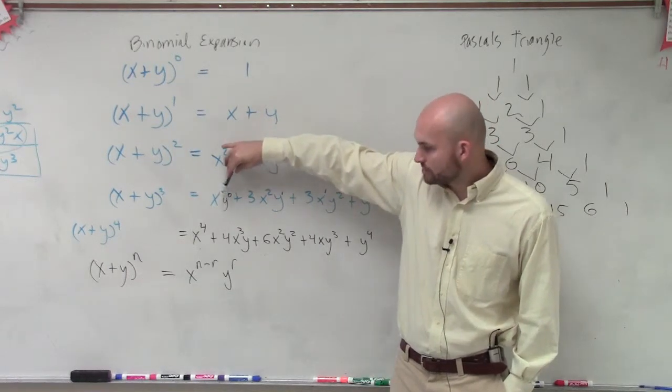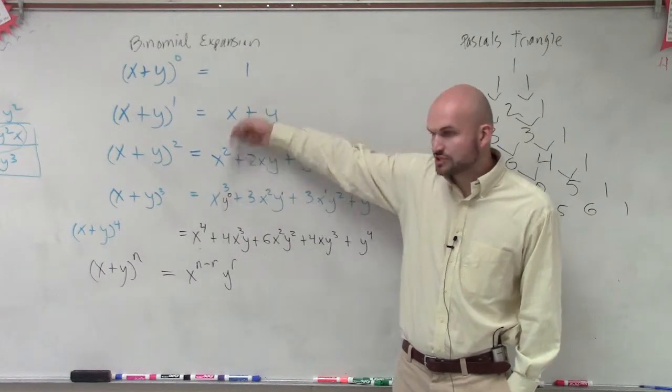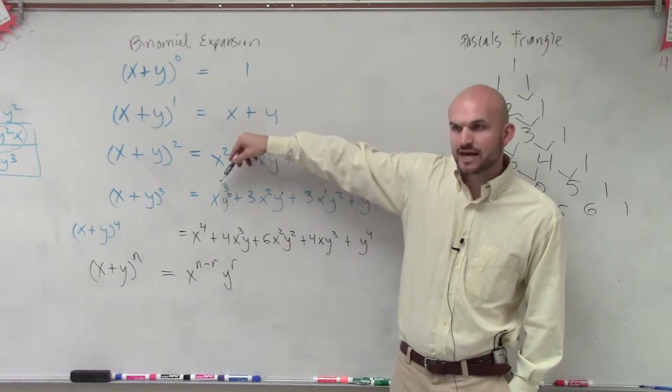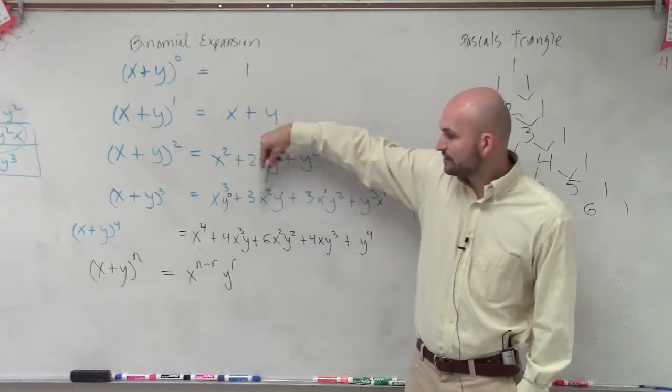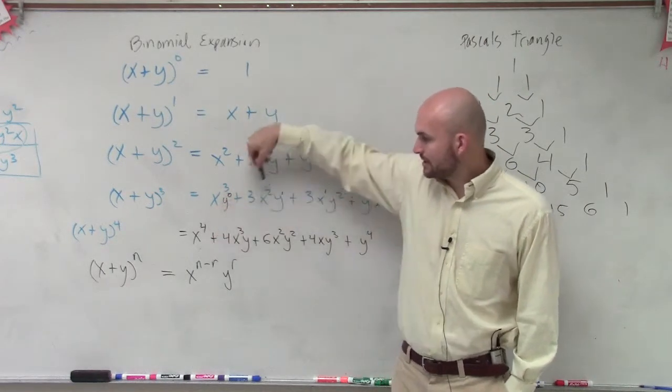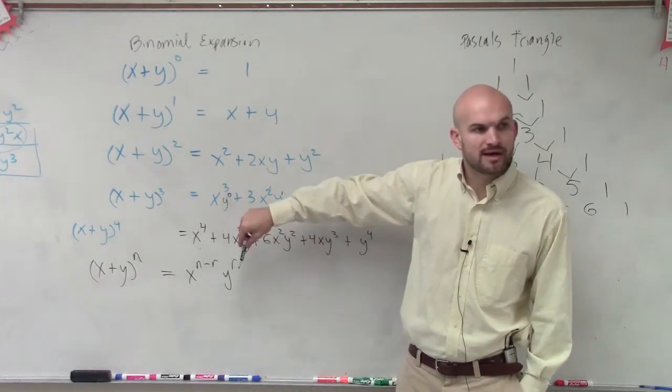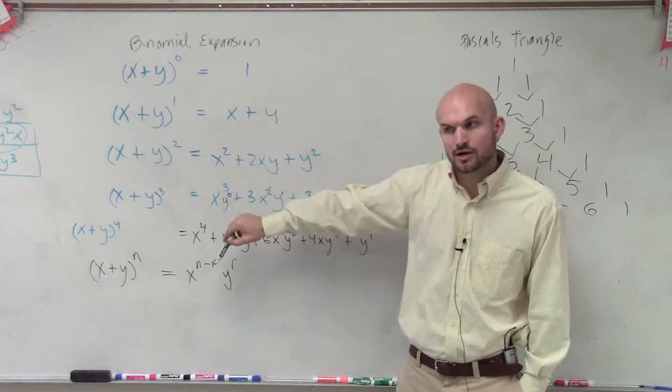0. Well, is 3 minus 0? 3, yes. And then you do y to the 0, which is 1. So therefore, that's already just left with x to the third. And then over here, now my y is 1. So 3 minus 1 is 2, right? And then you have y to the first power, y to the r.